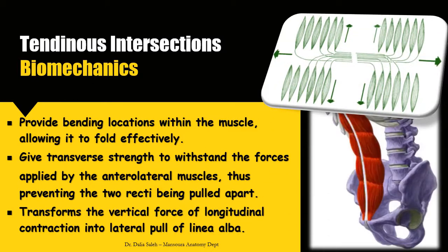Some tendinous intersections have special arrangements — laterally attached to the vertical muscle fibers and medially at the linea alba. This transforms the vertical force of longitudinal muscle contraction into a lateral pull on the linea alba. If there is sudden contraction, as in increased intra-abdominal pressure, this can lead to tearing of the aponeurotic fibers at the weak point, especially in a person with a single decussation in the linea alba.